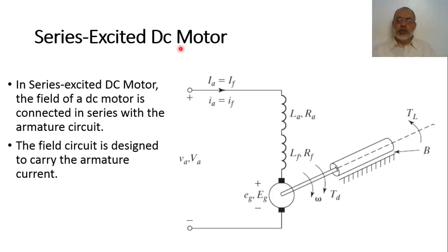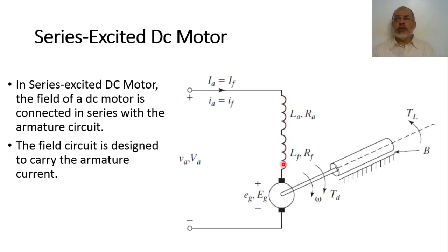In the previous video we studied the separately excited DC motor, where the armature circuit is completely separated from the field circuit. Now we are going to study another configuration called the series excited DC motor, where the armature and the field coils are connected in series together. In this case, both the armature current and the field current will be the same value, such that Ia equals If.